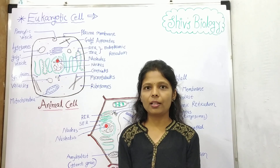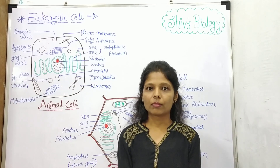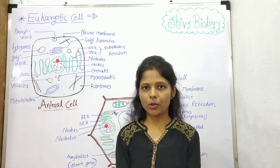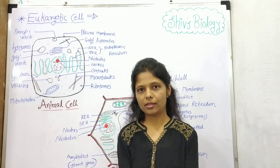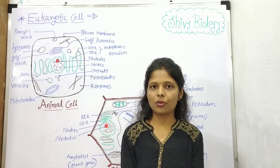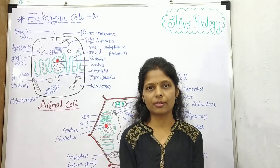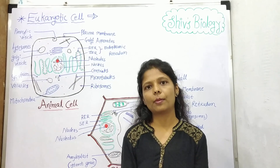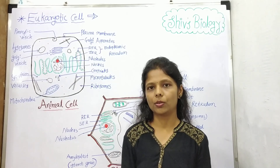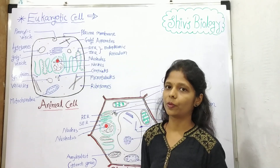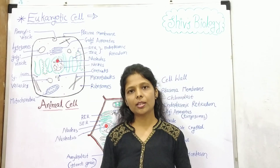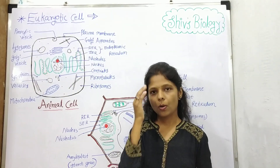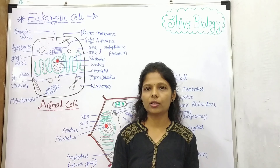Cell is a structural and functional unit of life. Mainly cells are classified into prokaryotic cells and eukaryotic cells. In previous videos we already discussed about the prokaryotic cells, and today and in some upcoming videos we discuss about the eukaryotic cells. Eukaryotic cells are an advanced type of cells and they are originated from the prokaryotic cells.